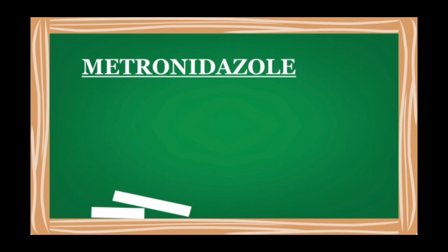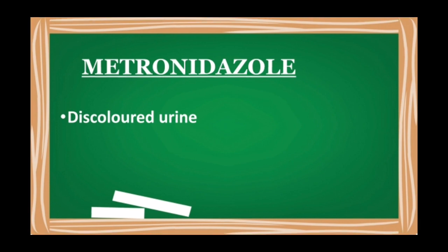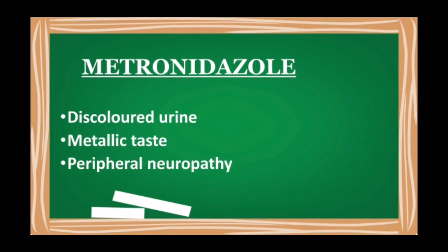Next is metronidazole. Its important side effects include discolored urine, metallic taste, and peripheral neuropathy — causing pain and inflammation in the nerves and muscles of the hands and feet.